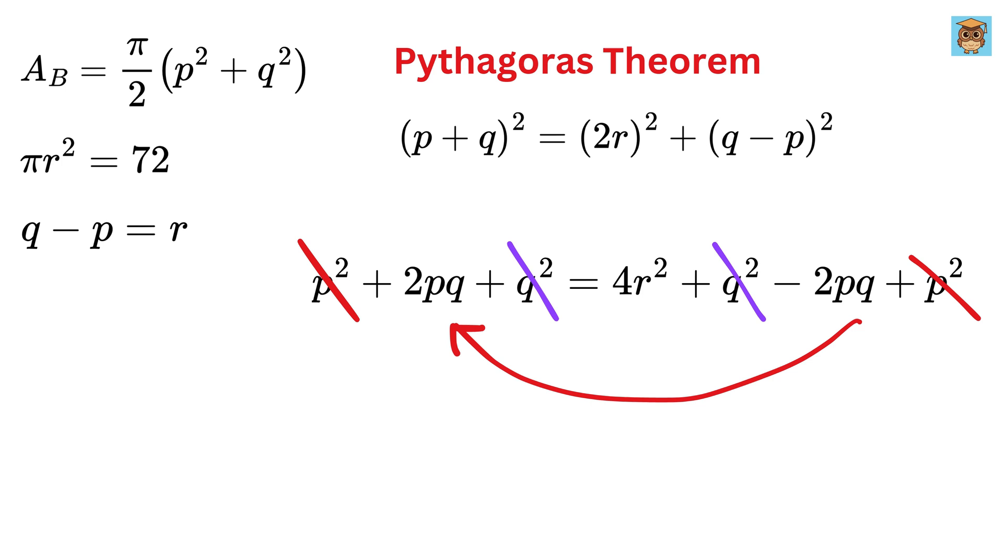Now, take 2PQ on this side to get 4PQ equals 4R², so we get R² equals PQ.